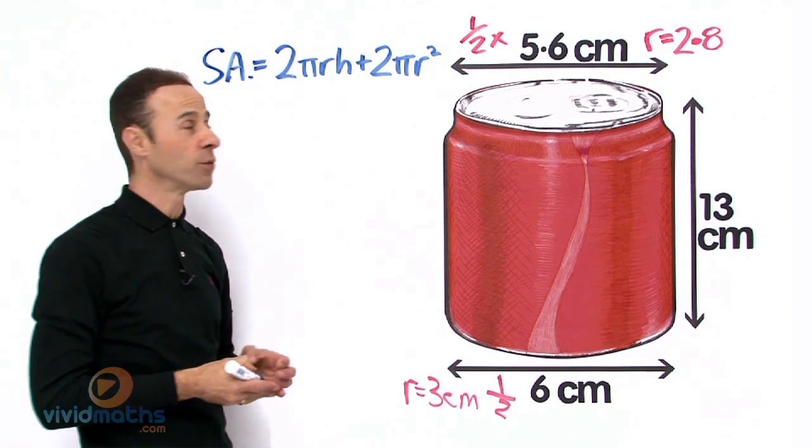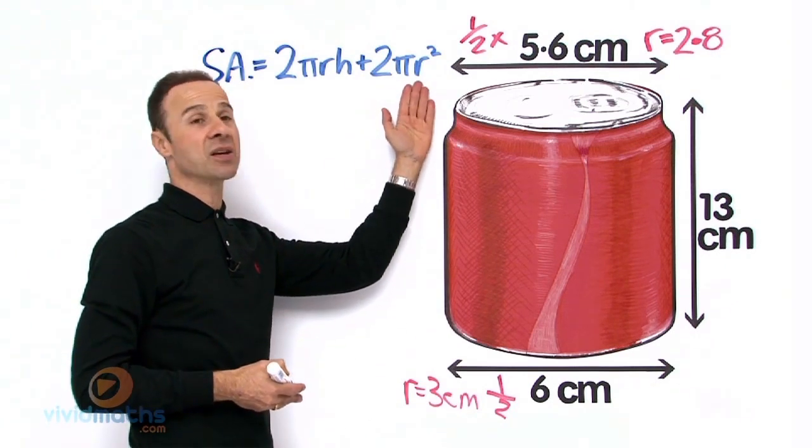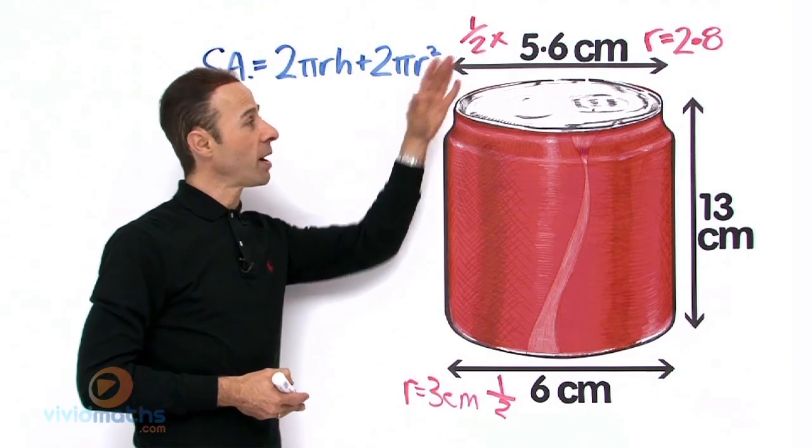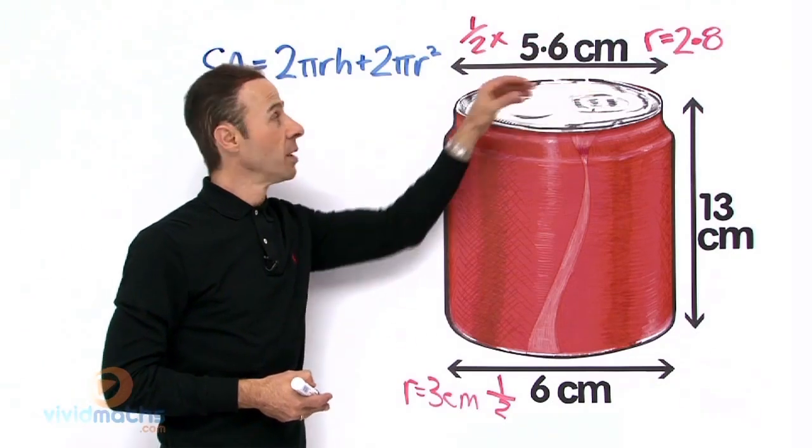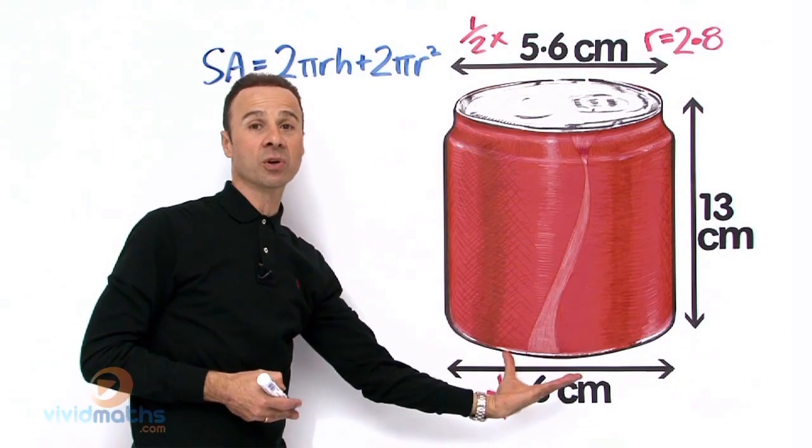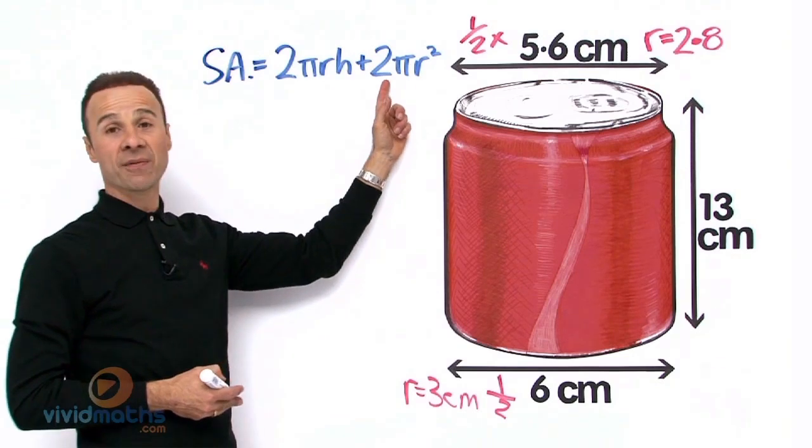Now the part we are going to transform in the formula is the second part here where it says 2πr². That refers to the πr² or area of the top circle and πr² at the bottom circle. Because there are 2 of them, that is why we have a 2 there.